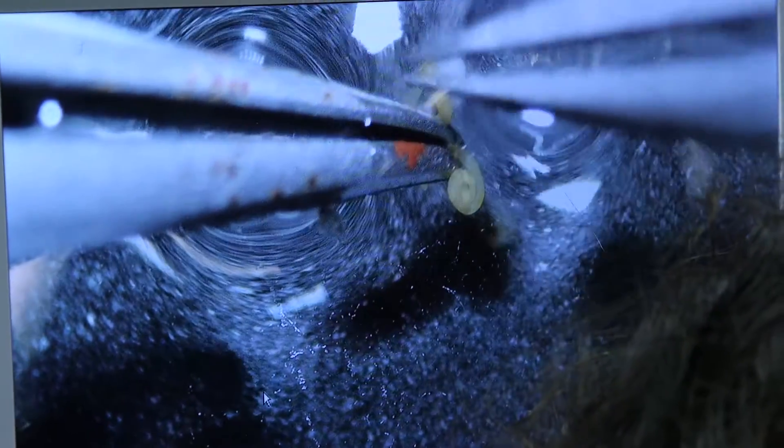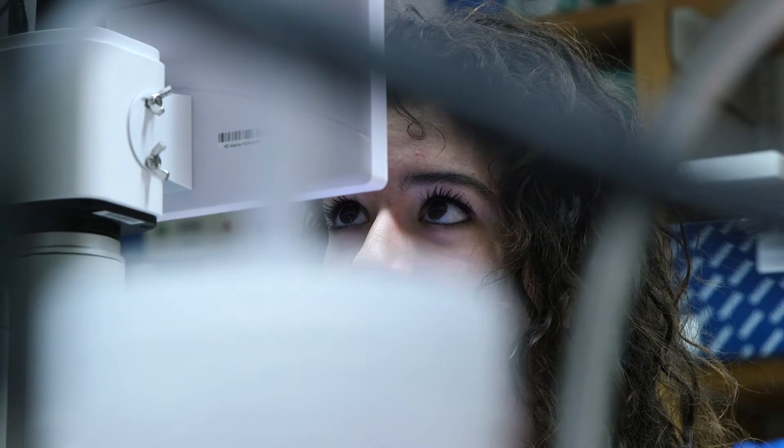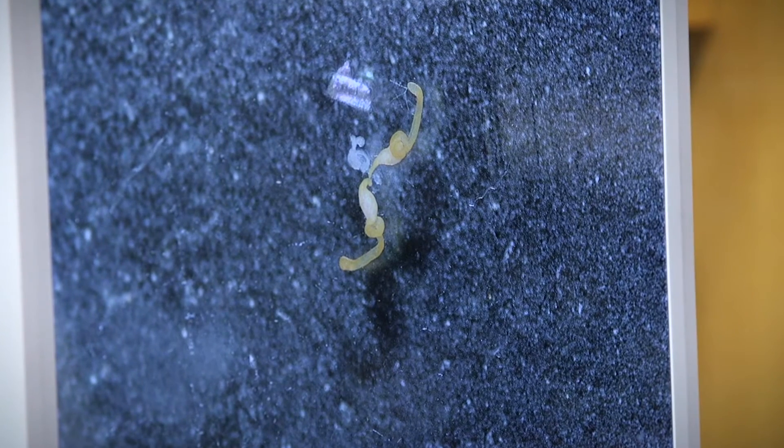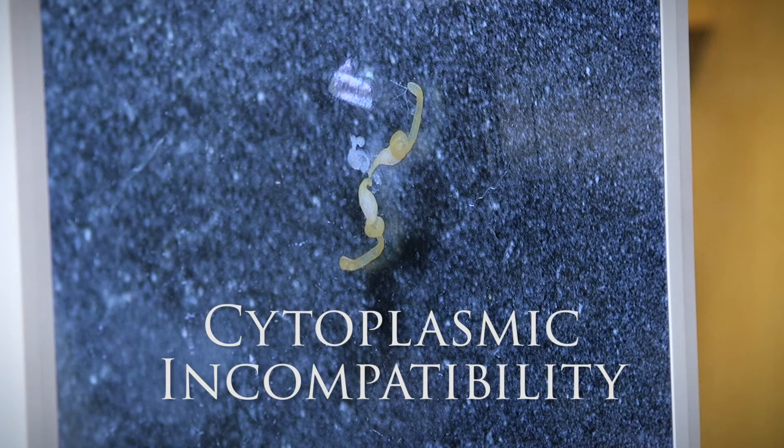She's using tweezers to separate out these testes. What Emily is showing us here are pairs of testes where Wolbachia bacteria normally infect and reside. This is where Wolbachia causes an infertility called cytoplasmic incompatibility.